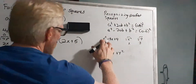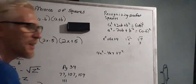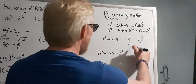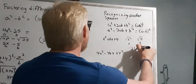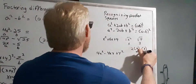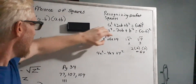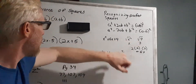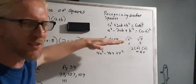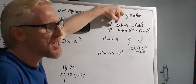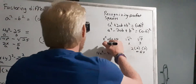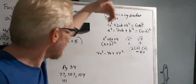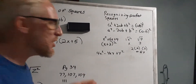Square root of the first term is x, square root of the last term is 3 — those are a and b. Multiplying 2 times a times b gives me 6x. Since everything is positive, I know this is in the form a squared plus 2ab plus b squared, which equals (a plus b) squared. So my answer is (x plus 3) squared, and if you multiply x plus 3 times x plus 3 you get x squared plus 6x plus 9.